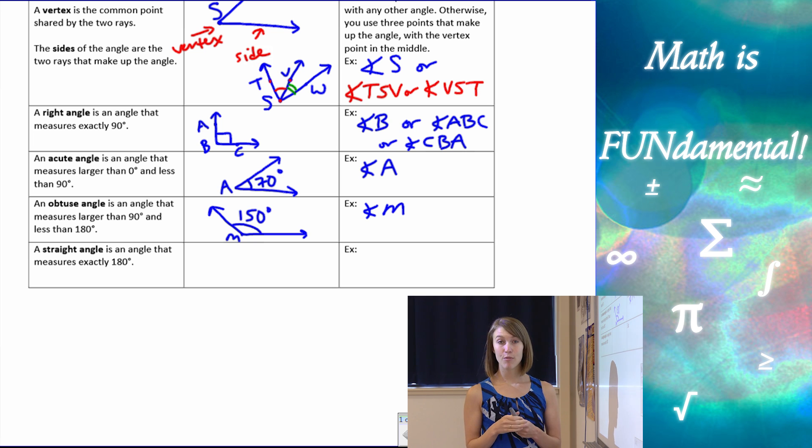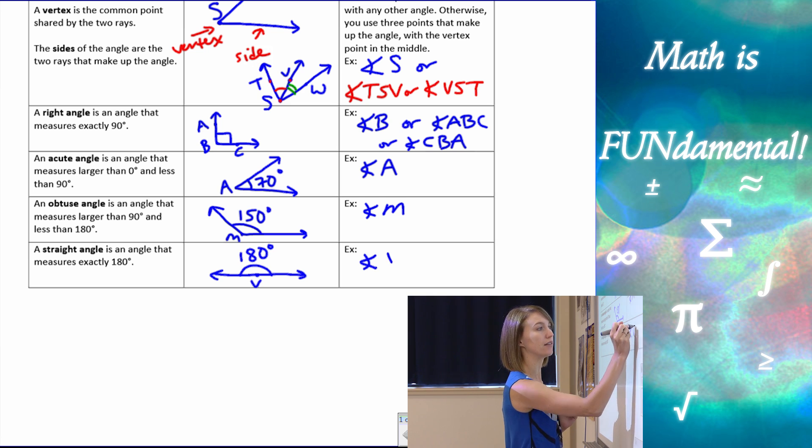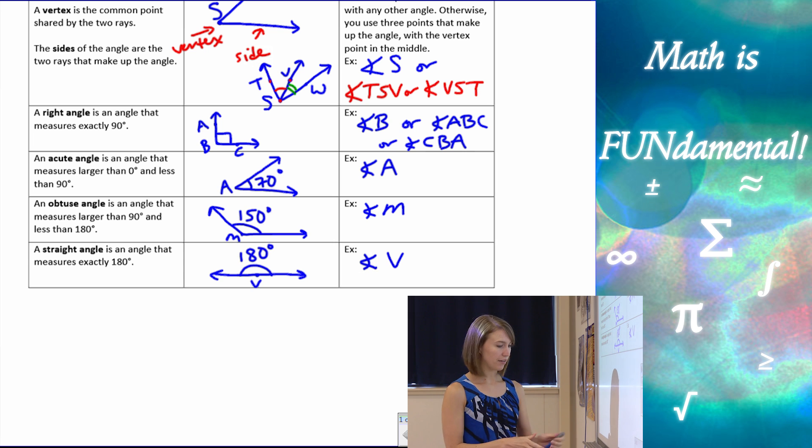And our last vocab word on this page is going to be a straight angle. And a straight angle is exactly what you think it's going to be. It's just a straight line. The angle goes all the way from one side to the next. It's exactly 180 degrees. We'll call it angle V.